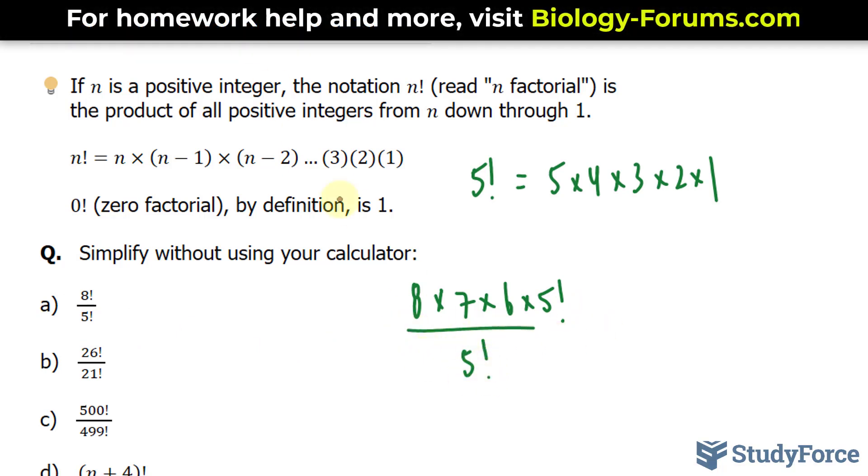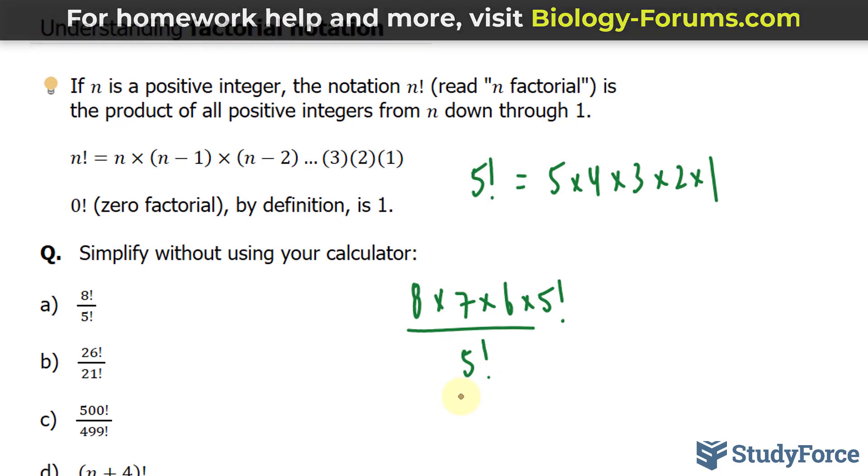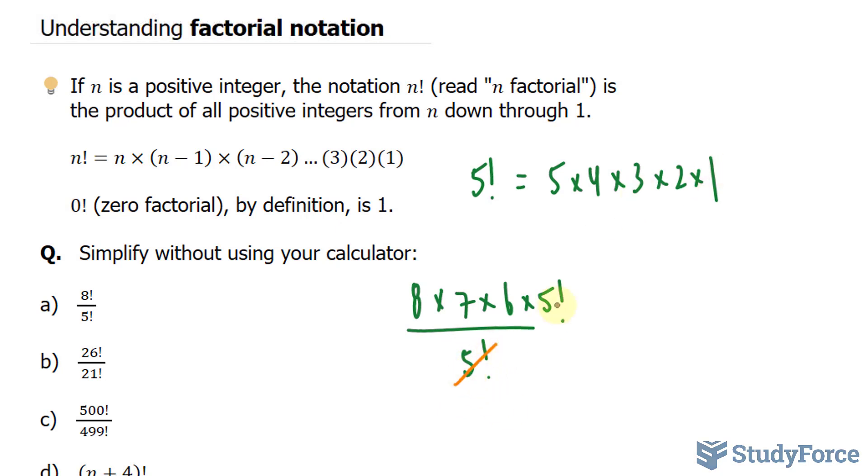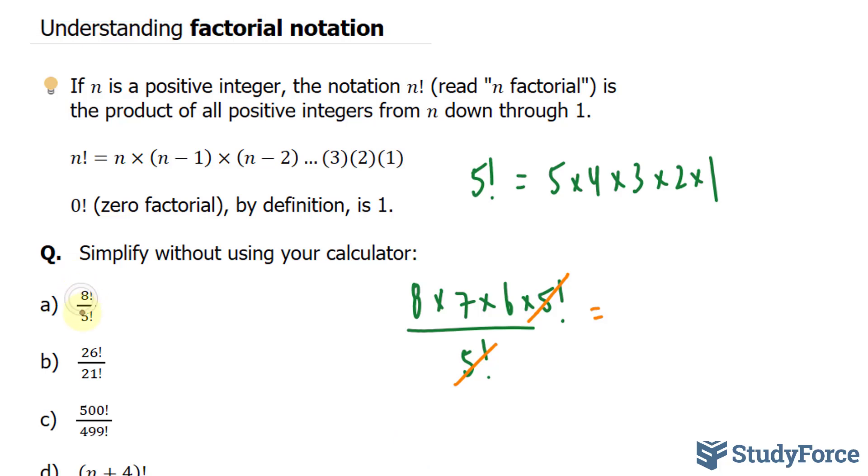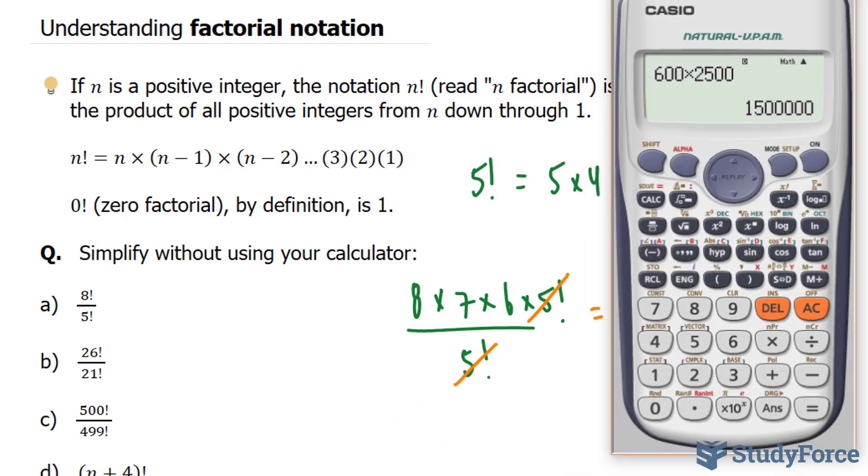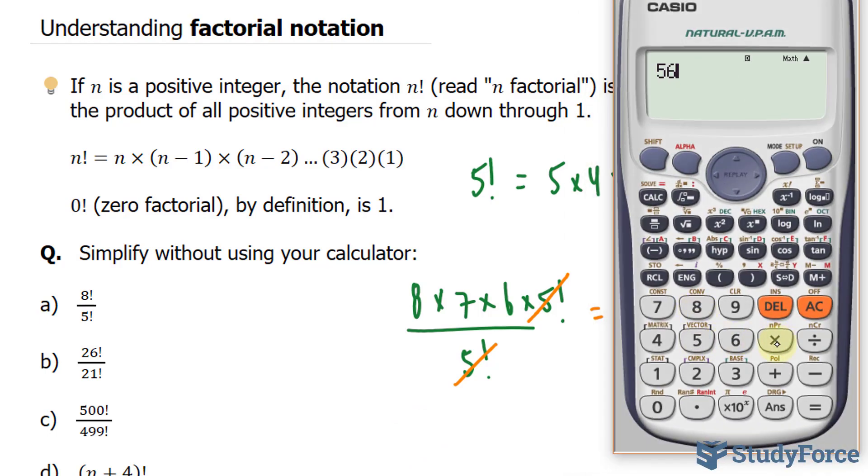So what I can do, instead of expanding 5 into 5 times 4 times 3 as shown here, I can cancel out this 5 factorial with this, and I end up with 8 times 7 times 6. And that's what they mean by not using your calculator. Meaning that they don't want you to write down 8 factorial over 5 factorial and get the answer. Instead they want 8 times 7 times 6, which you can now use your calculator. So we have 8 times 7 times 6 is equal to 336.